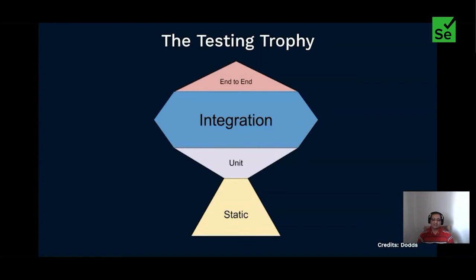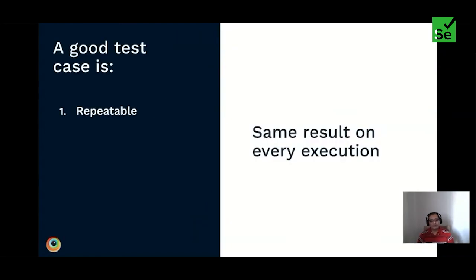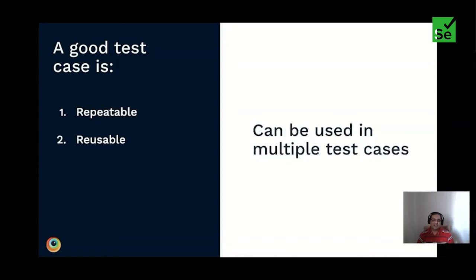Once you've identified the right model for automation strategy, let's dive into the characteristics of a good test case. A test case should be repeatable — it should yield the same result on every execution. It should be consistent: for example, a user signing in with a valid username and password should always end up logged in, regardless of how many times you execute the test. Identify generic test cases that can be reused across multiple scenarios. Look for common steps across all test cases for the functionality you're automating — for example, sign-in or search functionality on an e-commerce website.